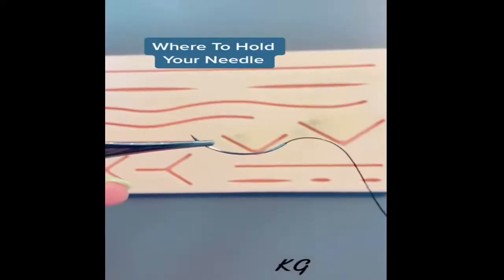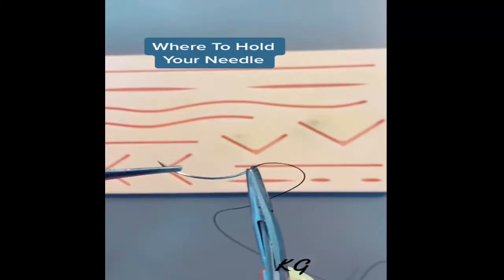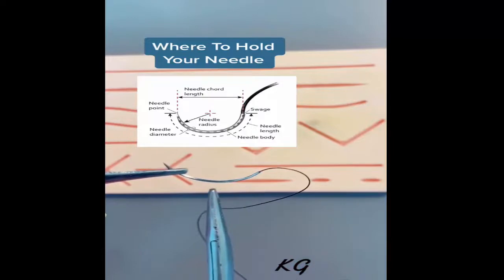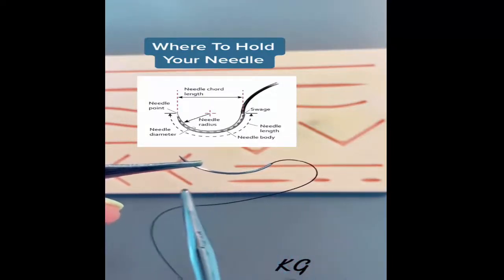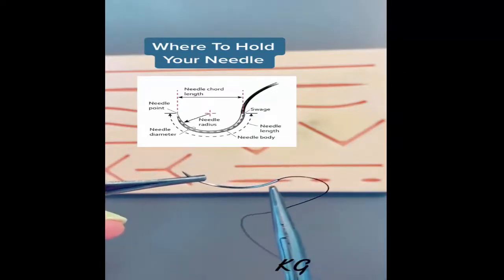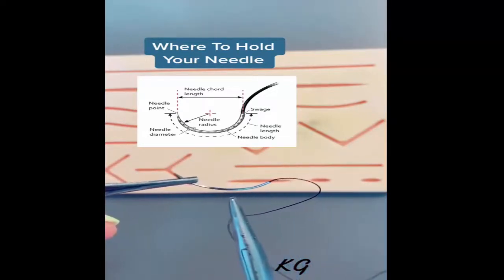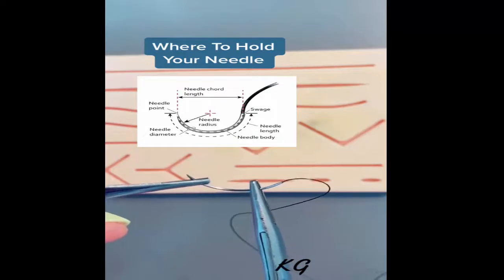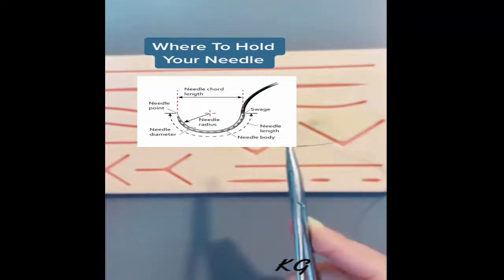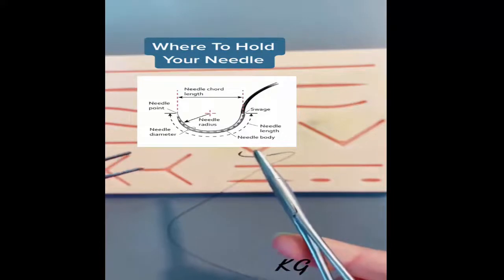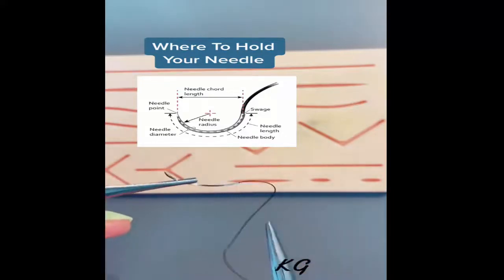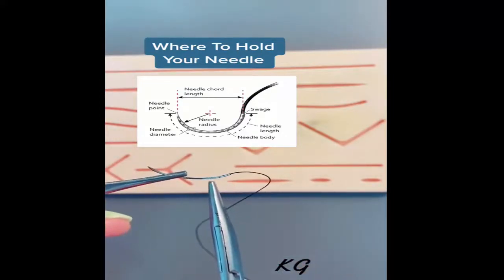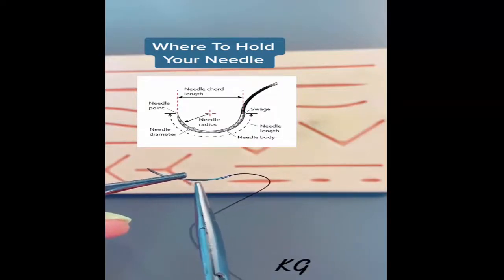Let's talk about where you should hold your needle with your needle driver. You do not want to hold it at the swage—that's where the suture and the needle connect. And you don't want to hold it right in the middle because that's not going to give you enough clearance to really flick your wrist and put in your suture. You want to do it in the middle of those two, right at the apex between the swage and the middle of the needle, right where I'm pointing. That's your sweet spot. That's going to give you room for motion and it's not going to bend your needle like if you hold it at the swage.